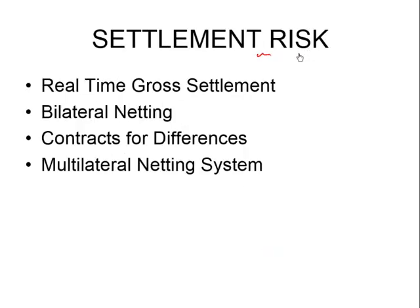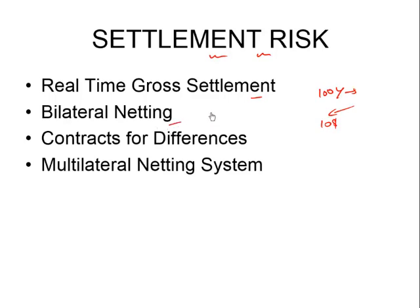Settlement risk is a special credit risk that happens at the time of settlement. For example, in a fixed-for-floating swap where I've made my payment in Japanese Yen and am supposed to receive payment in US dollars, if after I make the payment the other party fails to transfer its portion, that's called settlement risk. To reduce this risk, we often try to follow real-time gross settlement, where both parties transfer at the same time, or follow bilateral netting whereby only the net amount needs to be exchanged, reducing credit risk.